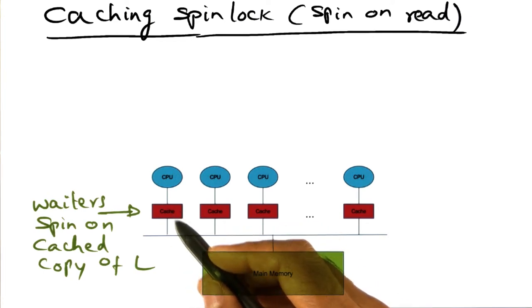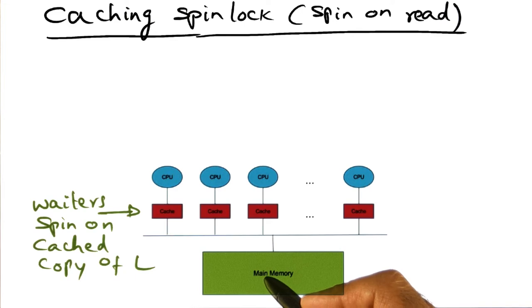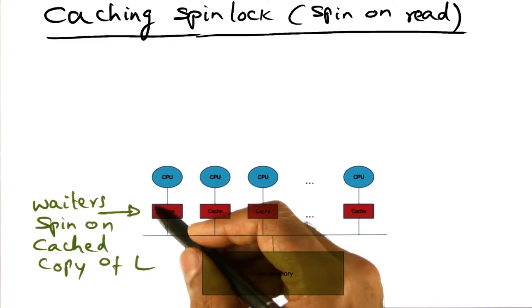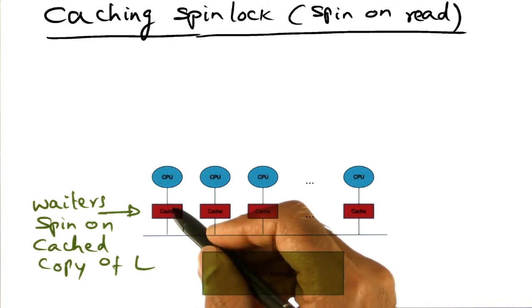The waiters, instead of executing a test and set instruction that has to go to memory, they can spin locally on the cached value of the lock.